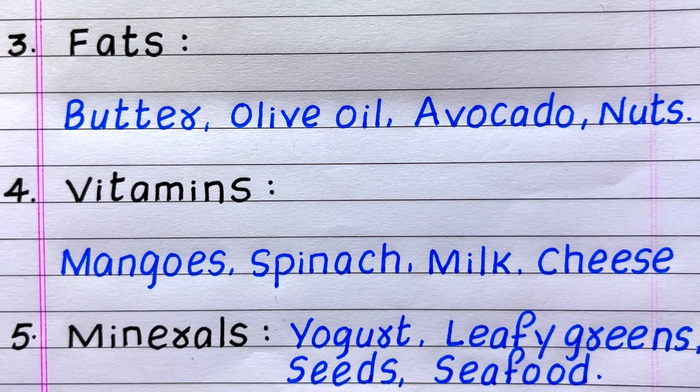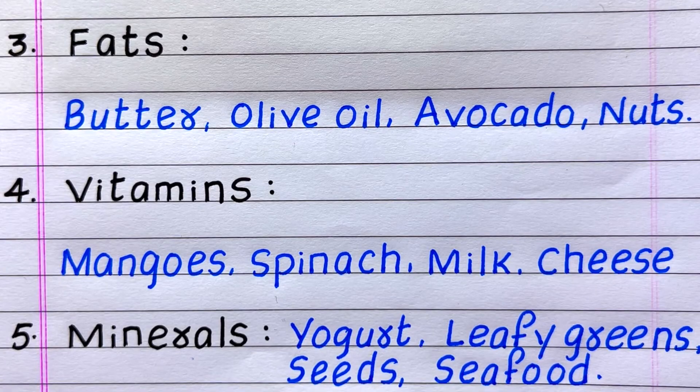The fourth major nutrient is vitamins. Sources of vitamins are mangoes, spinach, milk, and cheese.